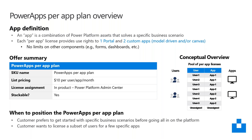One of the advantages of this plan is you can stack it. So if you have a scenario where you need four apps, you just purchase two app plans and apply those both to the same user. They'll then be able to use four apps within the portal. This is a good way for customers who only want to license a subset of users with a few specific apps, or someone who wants to get started on the platform.